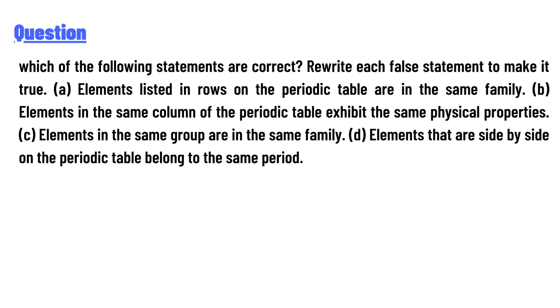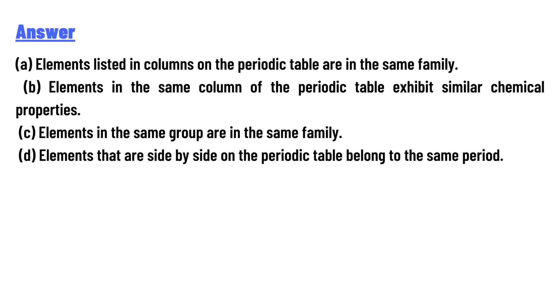(a) Elements listed in rows on the periodic table are in the same family. (b) Elements in the same column of the periodic table exhibit the same physical properties. (c) Elements in the same group are in the same family. (d) Elements that are side by side on the periodic table belong to the same period.